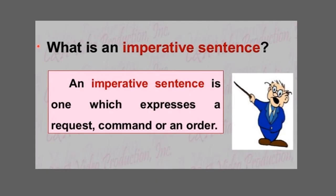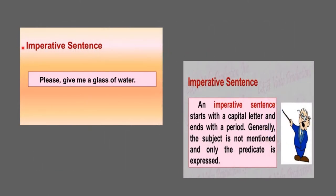An imperative sentence is one which expresses a request, a command, or an order. Example: 'Please give me a glass of water.' This is an imperative sentence expressing a request. An imperative sentence starts with a capital letter and ends with a period or full stop.